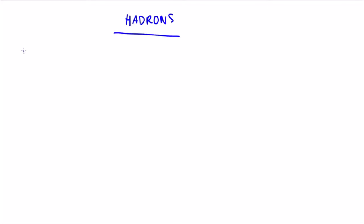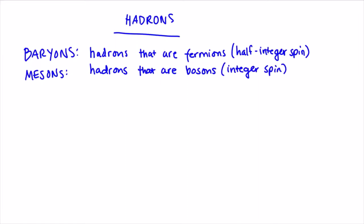First, we start off with some more classifications. Hadrons can either be fermions with half-integer spin or bosons with integer spin. Hadrons that are fermions are called baryons, and hadrons that are bosons are called mesons.